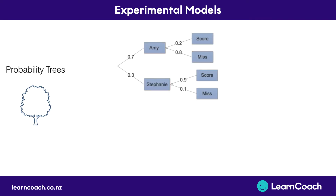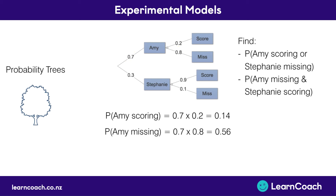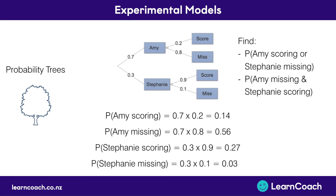Now we'll look at probability trees. In the exam they might give you a tree that looks very different to this, but you can apply the same concepts. We're finding the probability of Amy scoring or Stephanie missing, and also the probability of Amy missing and Stephanie scoring. The probability that Amy gets the ball is 0.7, and the probability of her scoring is 0.2, so 0.7 times 0.2 equals 0.14. The probability of Amy missing is 0.7 times 0.8, which equals 0.56. The probability of Stephanie getting the ball and scoring is 0.3 times 0.9, which equals 0.27. And the probability of Stephanie missing is 0.3 times 0.1, which equals 0.03.